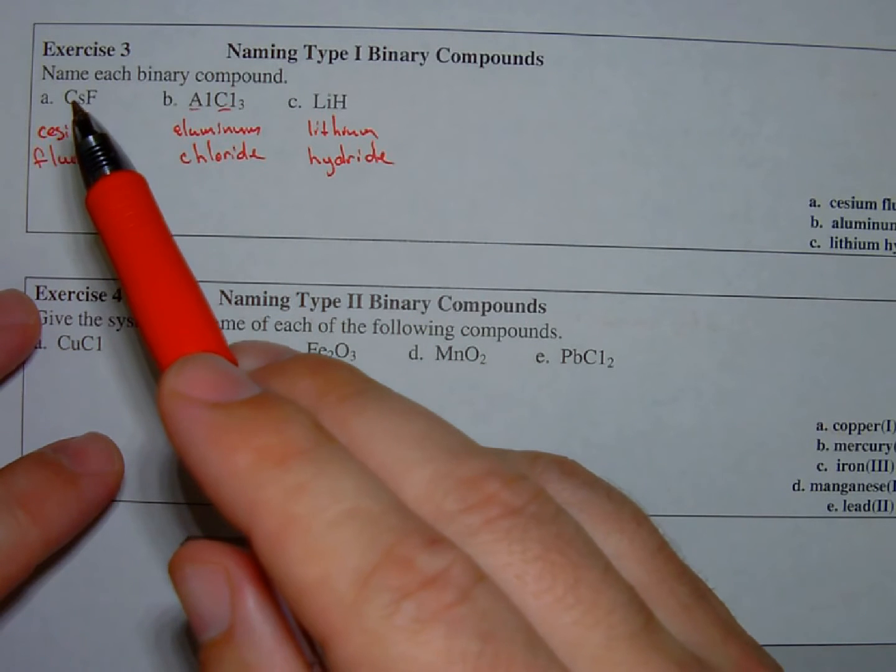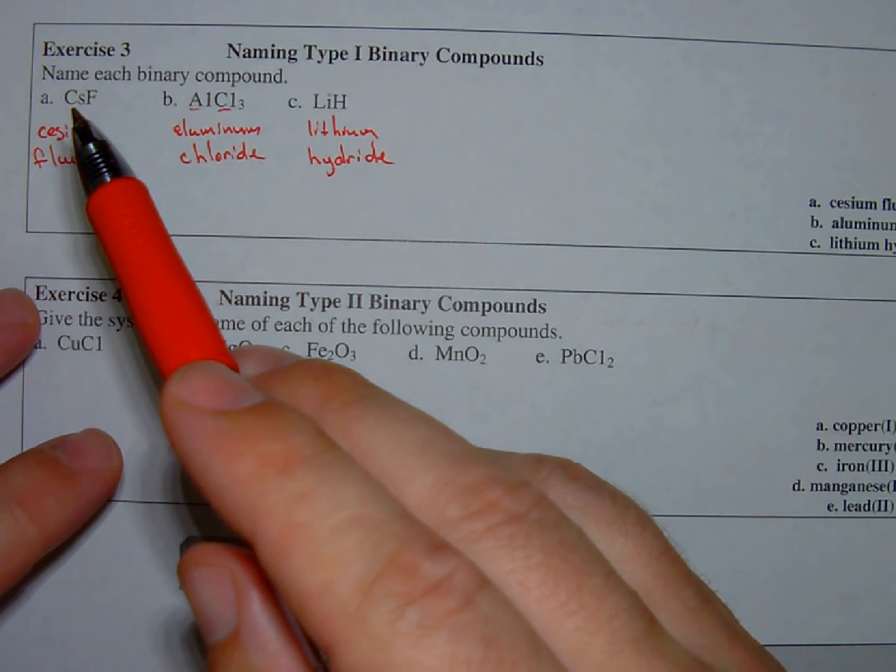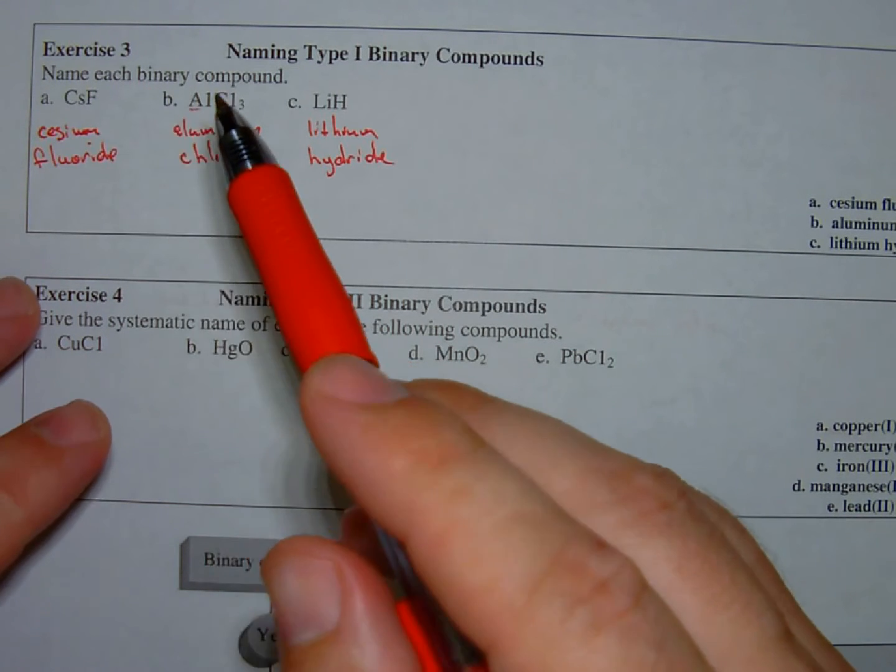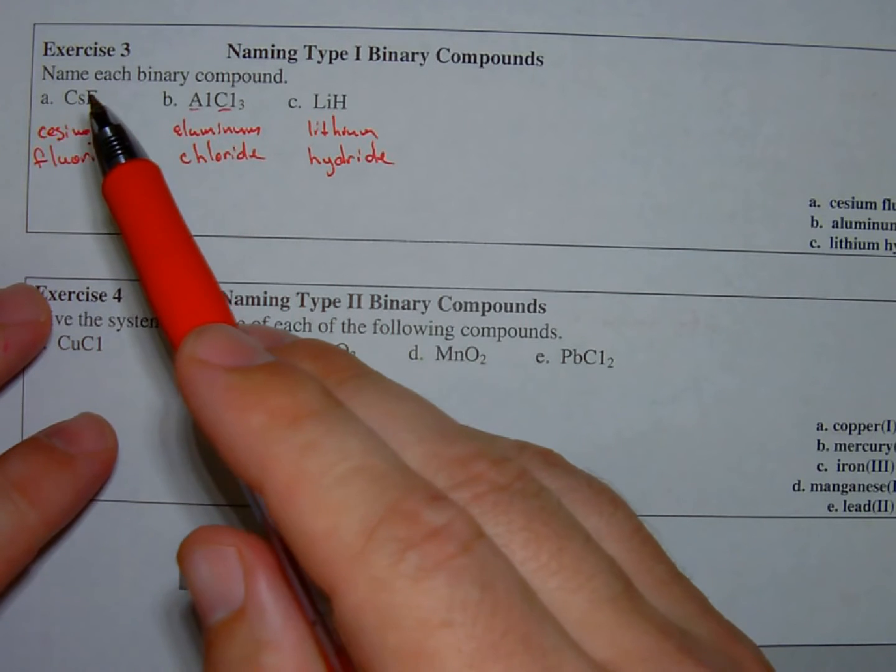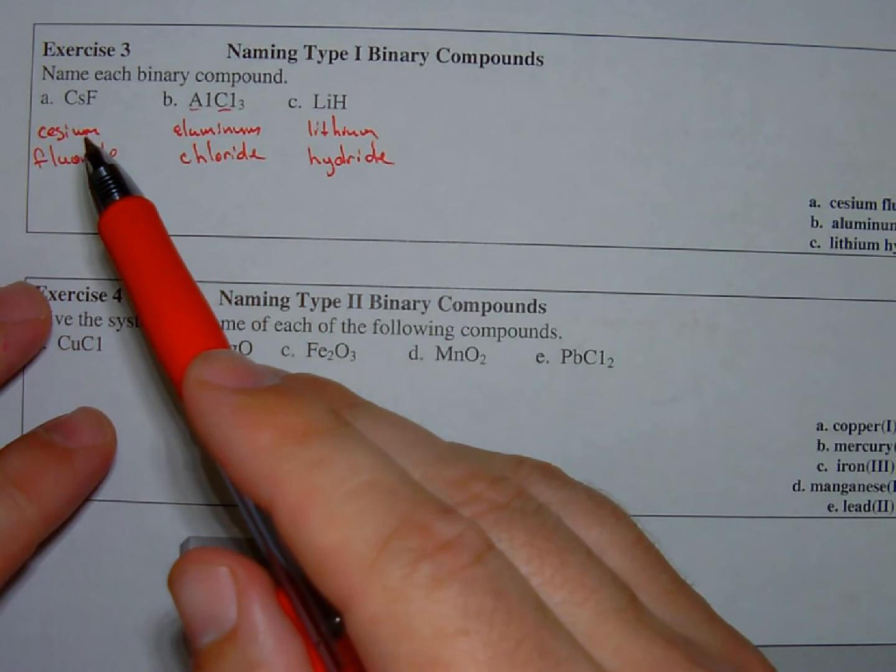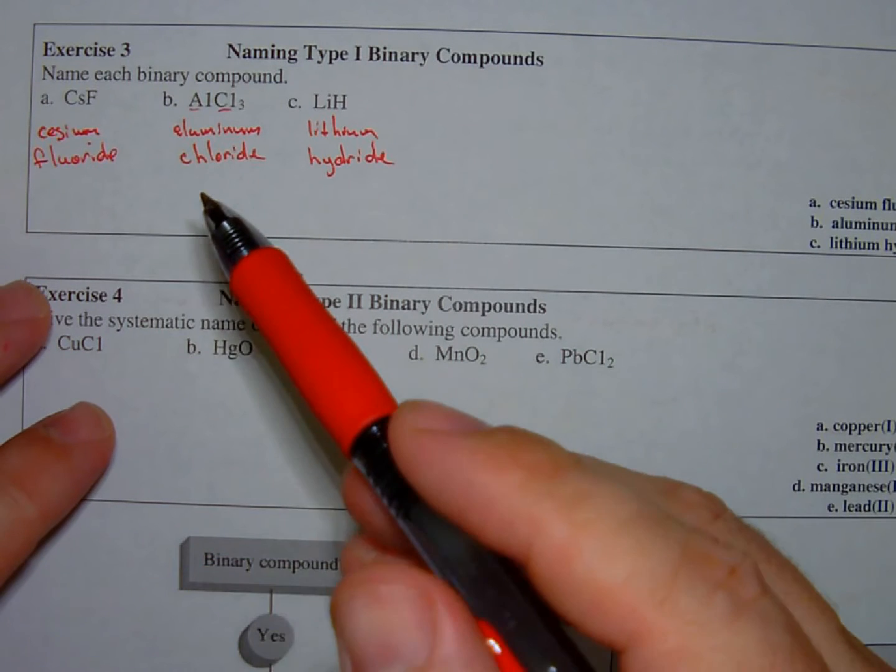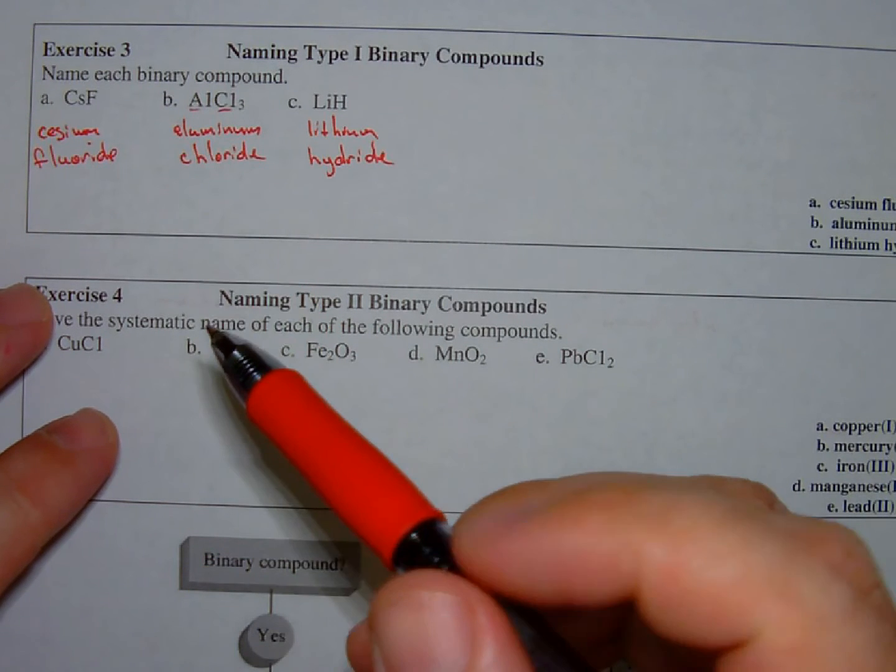Because representative metals always form the exact same charge, they never vary, and because all representative elements only form one charge, so that's cesium and fluorine, I just tell you that it's cesium, fluorine. I balance those charges. I don't have to tell you how many there are.